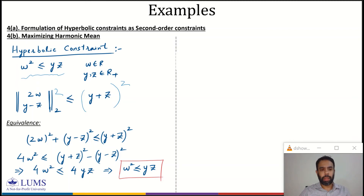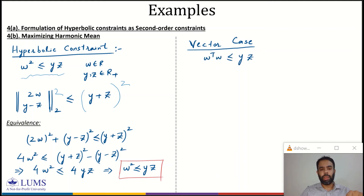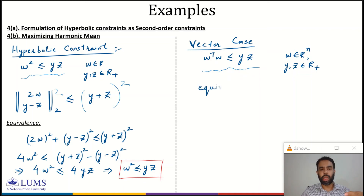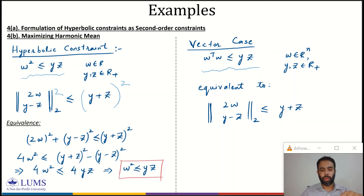We can also look at the vector case. Here w is a vector in R^N and y, z are scalars in R₊, so w² is replaced by w^T w. The hyperbolic constraint w^T w ≤ yz can be represented as the equivalent second-order constraint: norm of [2w; y − z] ≤ y + z.